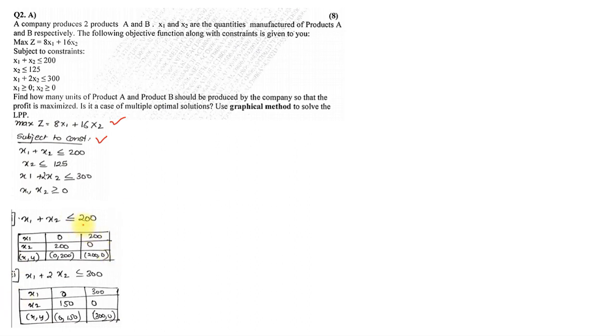For x1 plus x2 equals 200, we'll write first x1 as 0. If x1 is 0, x2 will become 200, and if x2 is 0, x1 will become 200. So our first coordinates are 0,200 and 200,0. Similarly in the second equation x1 plus 2x2 equals 300. If we give x1 as 0, we'll get x2 as 150, and if x2 is 0, we will get x1 as 300.